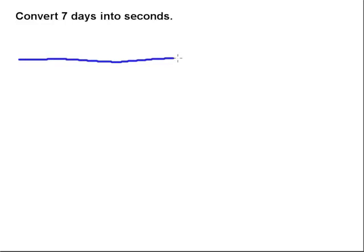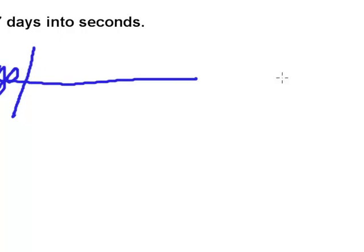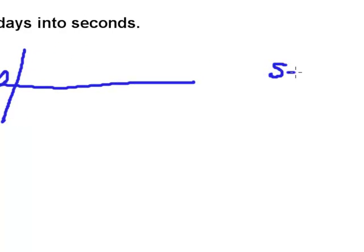I'm going to start by drawing the backbone of my railroad track, and I'm going to put where I'm starting, 7 days, up here on the front end and draw that bar to separate it. Down here on the other end, I'm going to place the units that I want to go to. In this case, it's seconds.